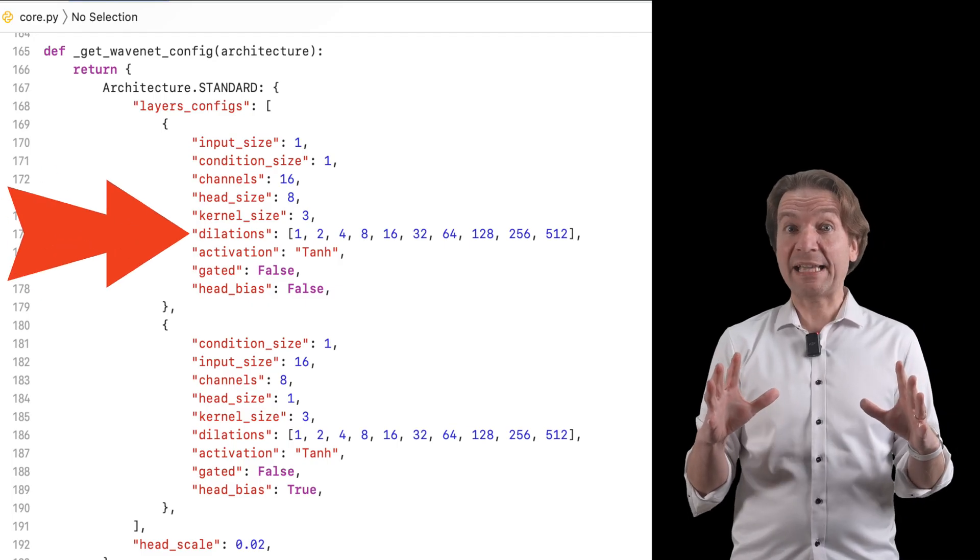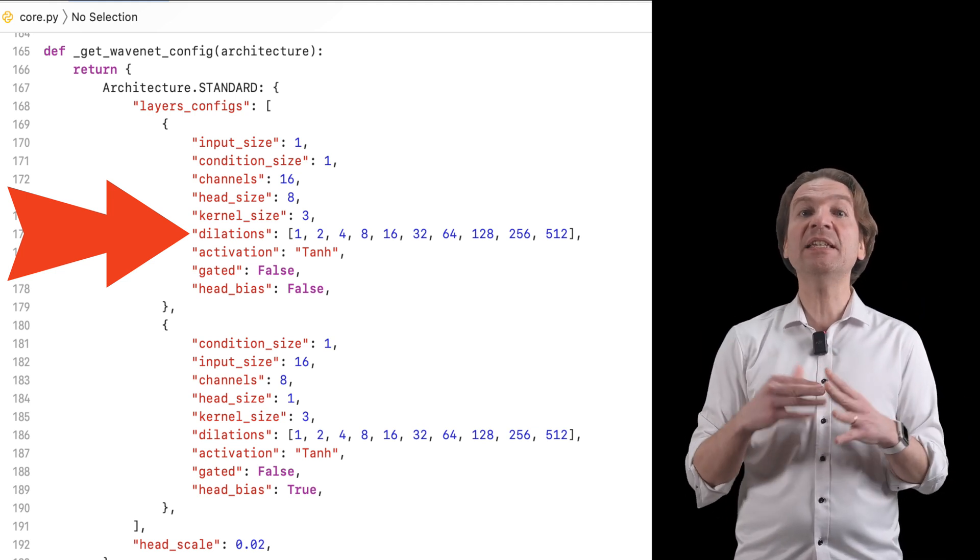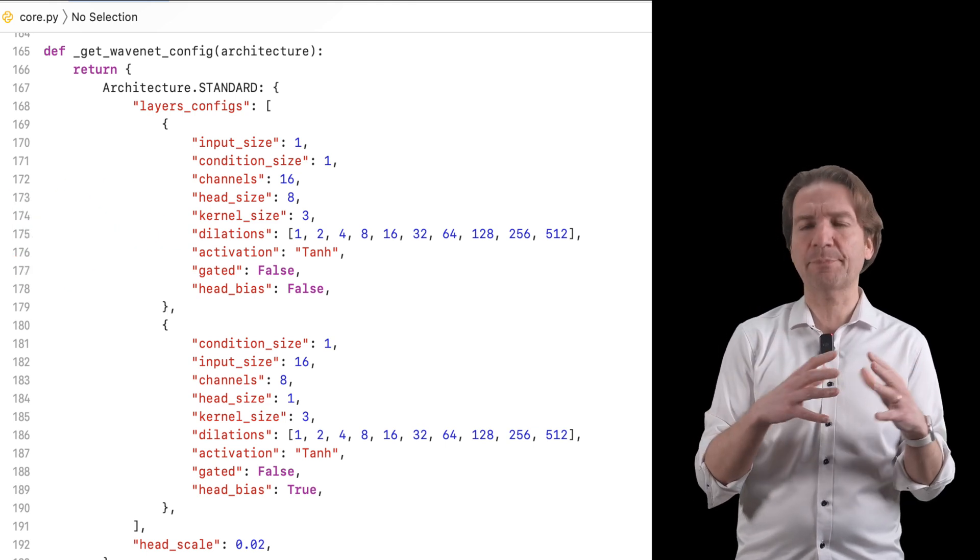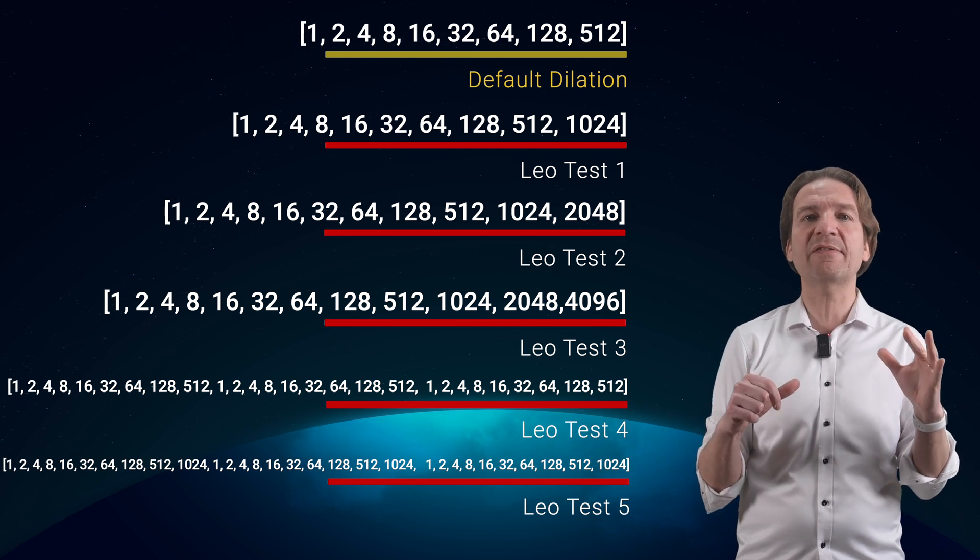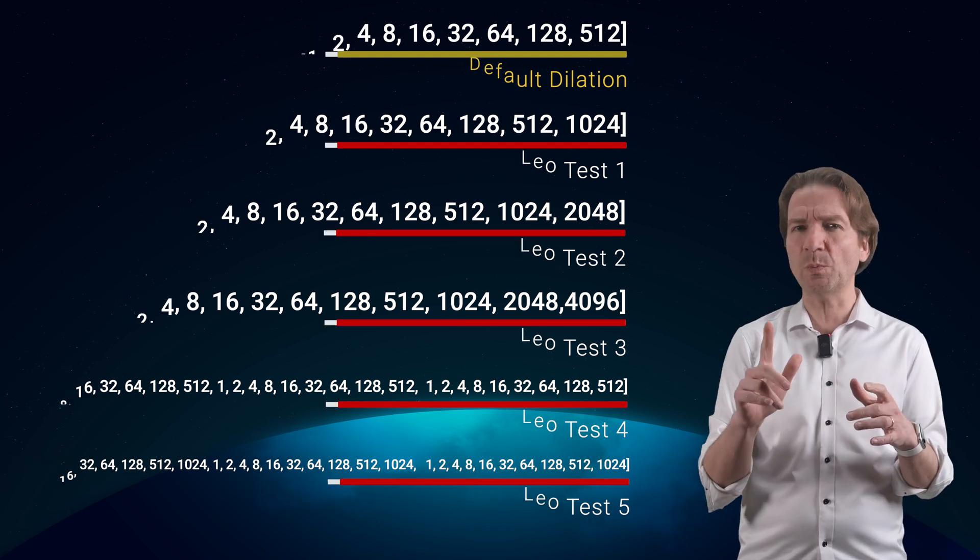In order to provide the neural network with more prediction pipelines, I have increased the dilation, trying some variants. This is the default and these are the variants I have tried. We will see the simulations and the results I obtained in a few minutes.